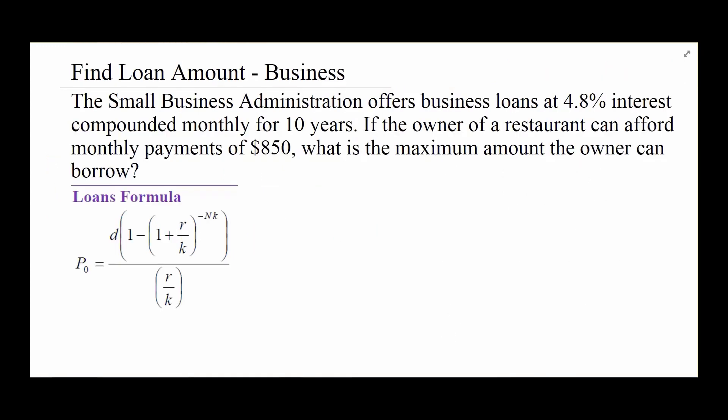So now let's look at using the loans formula a little more directly. The Small Business Administration offers business loans at 4.8% interest compounded monthly for 10 years. If the owner of a restaurant can afford monthly payments of $850, what's the maximum amount that he can borrow with this type of loan? In this case, the amount that he can afford to pay, that's the D value.